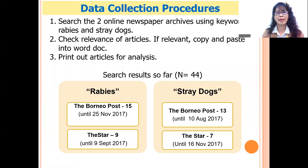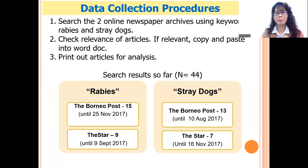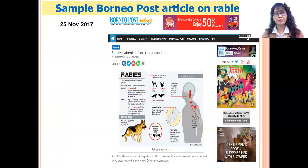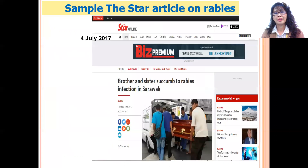For the data collection procedures, to find the newspaper articles on rabies I searched the two online newspapers using the keywords 'rabies' and 'stray dogs.' If articles are relevant, I copy and paste them into a Word document and print them for analysis. This is the search results so far, along with an example of an article from the Borneo Post and an example from The Star.